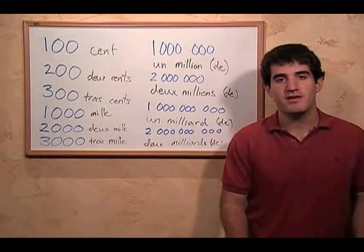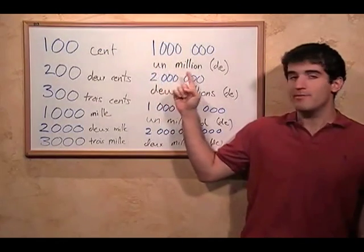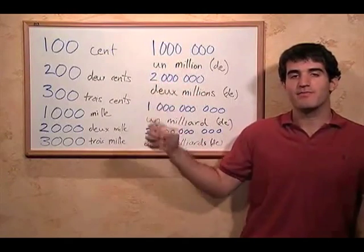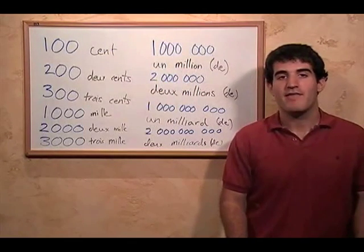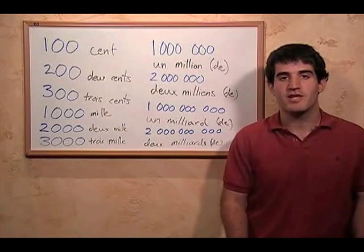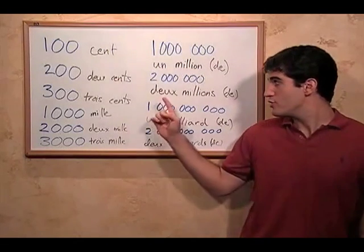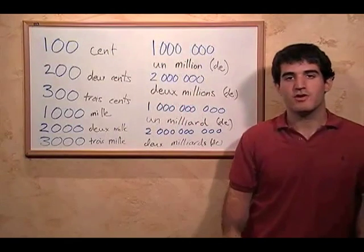For a million, we say un million — so we do have this un. And then for more than a million, we say the number of millions the same way we did for a hundred and a thousand. So two million is deux millions, and so on.